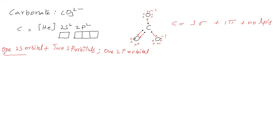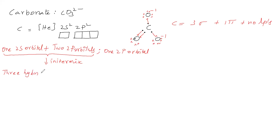The one 2s orbital and two 2p orbitals undergo intermixing. Due to intermixing, 3 hybrid orbitals are formed. The name of the hybrid orbitals is sp². So sp² hybrid orbitals are formed.